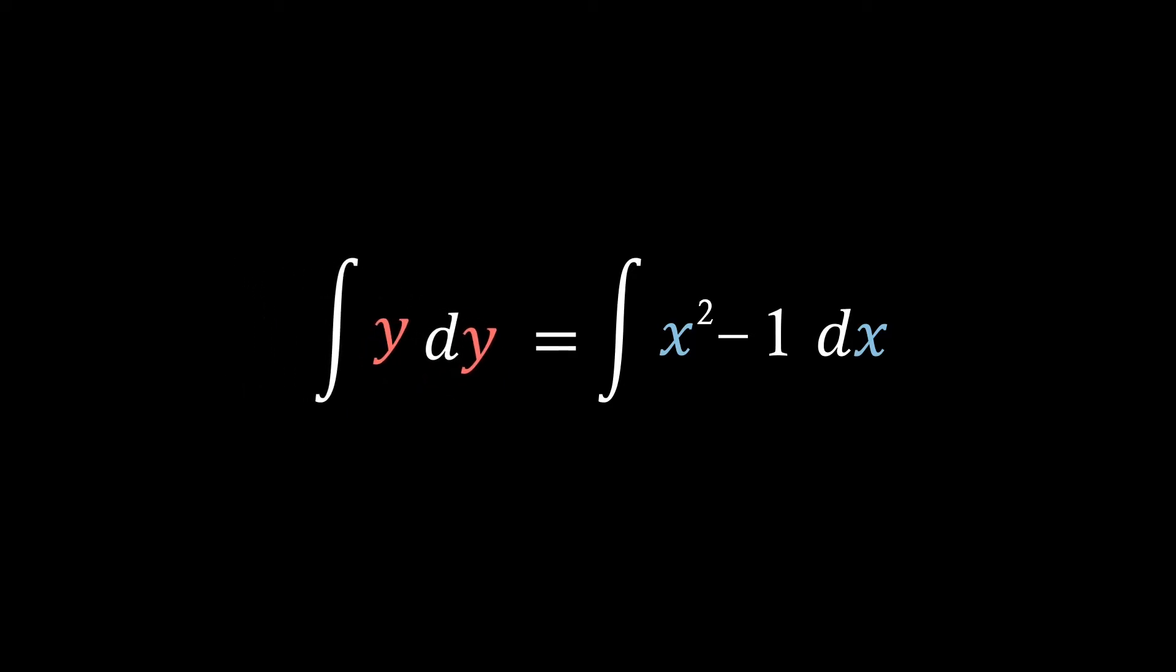So let's firstly integrate the right hand side where we'll just write c as the constant of integration. Now integrating the left hand side and combining the constant of integration together we see that we're just left with y squared over 2 equals x cubed over 3 minus x plus c to which we can quite easily rearrange and make y the subject.